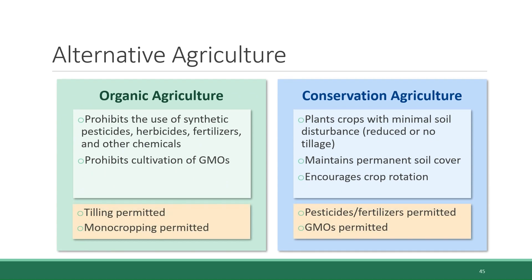Each approach permits things that the other does not. For example, in organic agriculture, tilling is fine and monocropping rather than crop rotation is also fine, whereas those things are not part of conservation agriculture. Conversely, in conservation agriculture, you can use pesticides, fertilizers, and GMOs, all of which are prohibited in organic agriculture. However, one thing these approaches share in common is that they both lead to improved biodiversity and have a lower environmental impact compared to conventional agricultural methods.